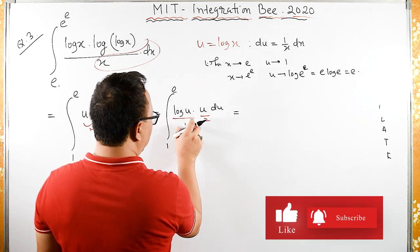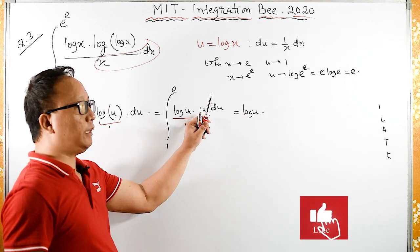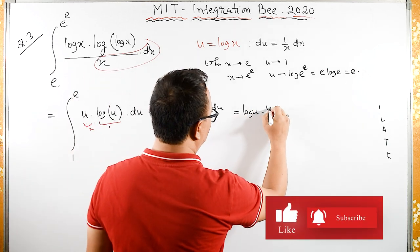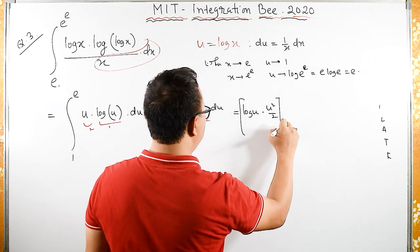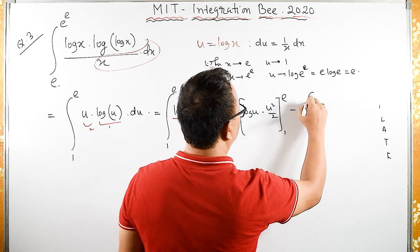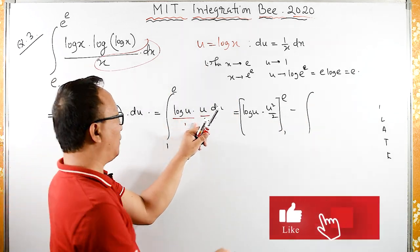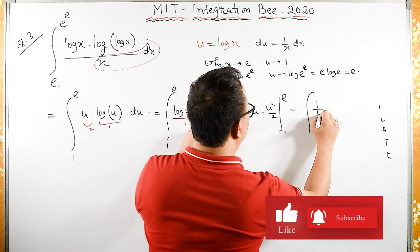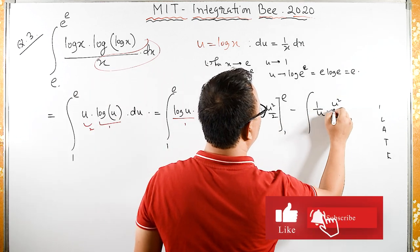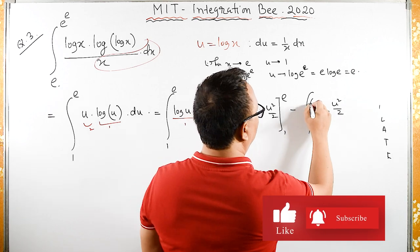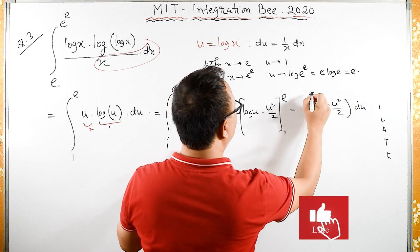By integration by parts: log u times the integral of u, which is u squared upon 2, limit 1 to e, minus the integral of the derivative of log u, which is 1 by u, times u squared upon 2 du, limit 1 to e.